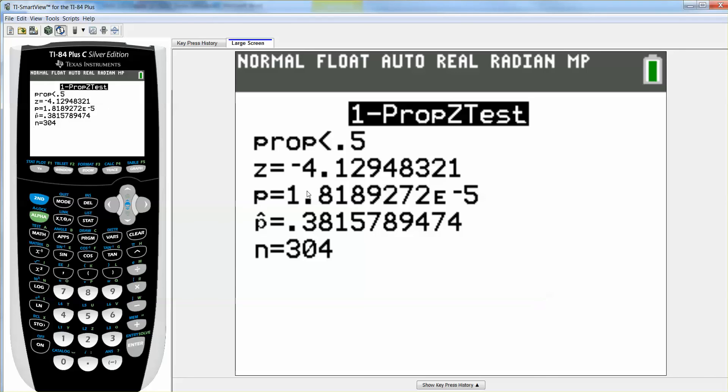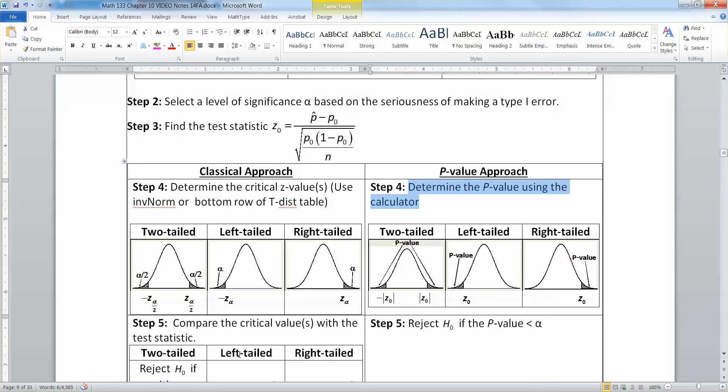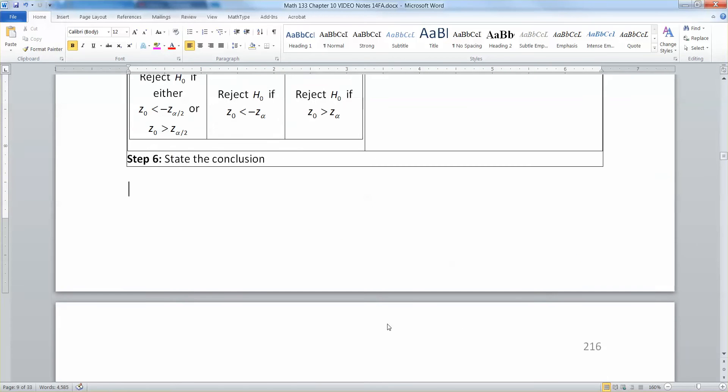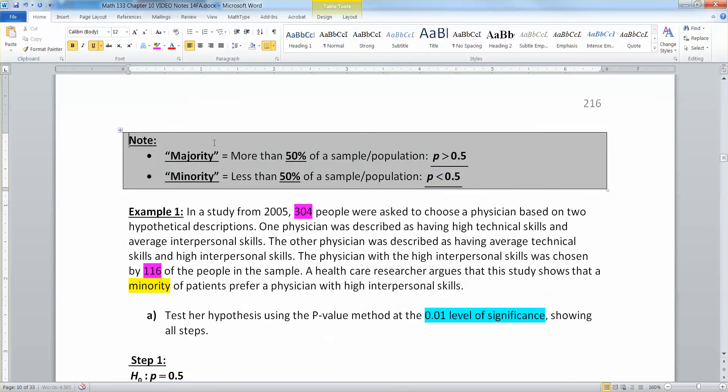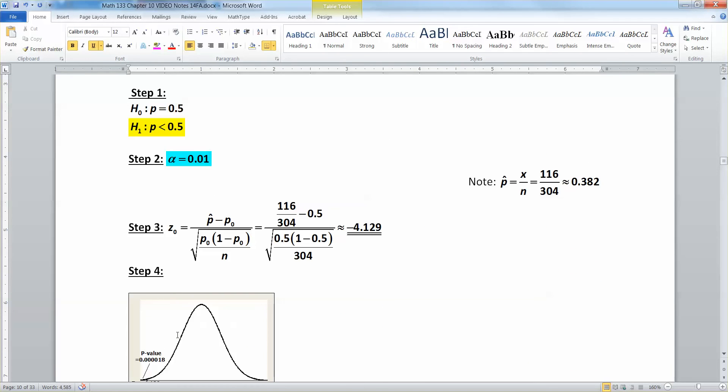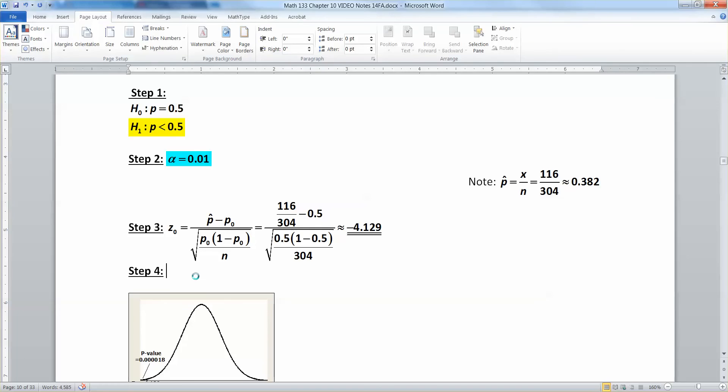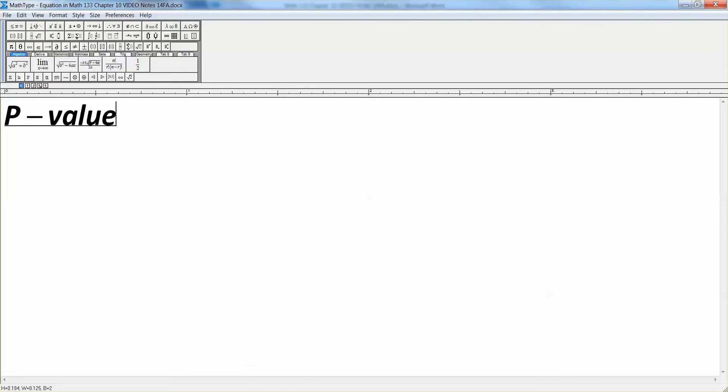Look at this p right here in the center. p equals 1.8 blah blah blah e negative 5. That means that it's five, the decimal point is five spots over to the left. Alright. So, let me type that in real quick. So, the p-value equals 1.8 e negative 5. That's 0.000018. Right?